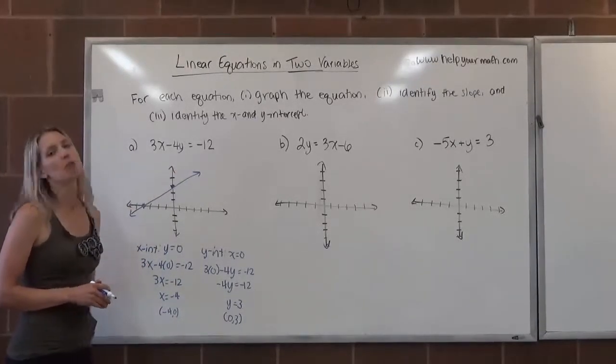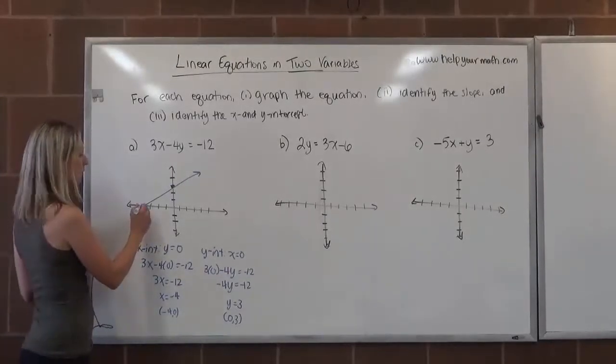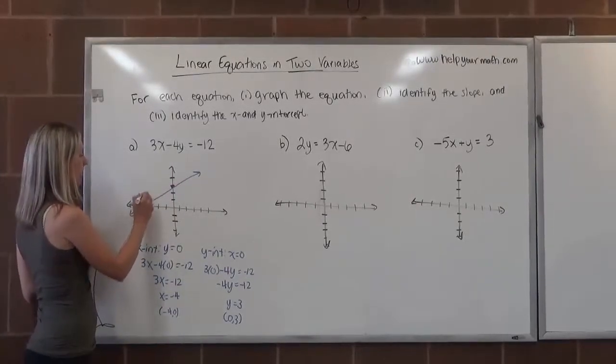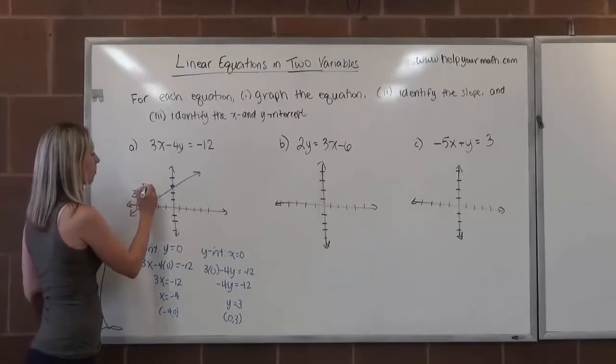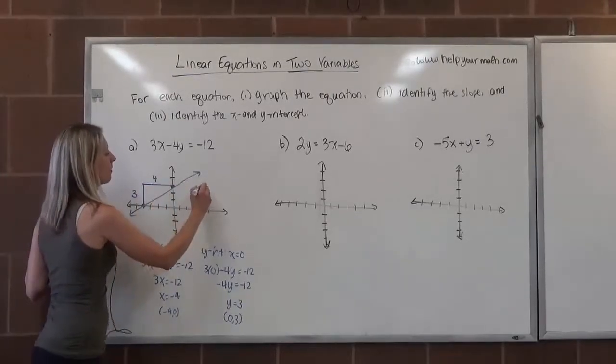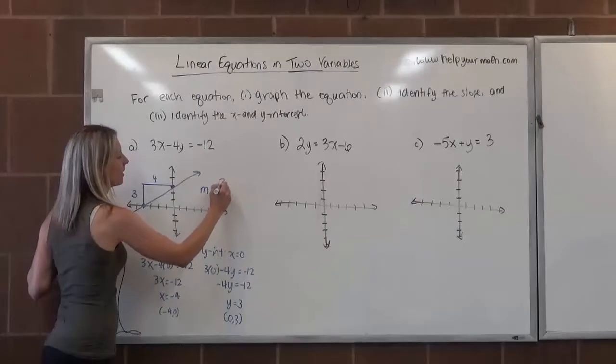Okay, if we're going to find the slope based on the graph, we're going to do rise over run. To go from here to here, I rise up 3 and I run 4. So that would make my slope 3 over 4.